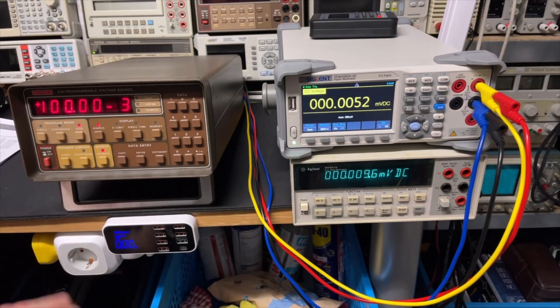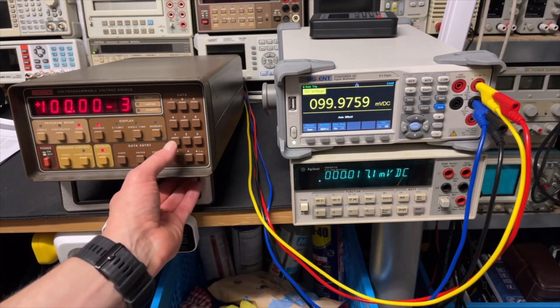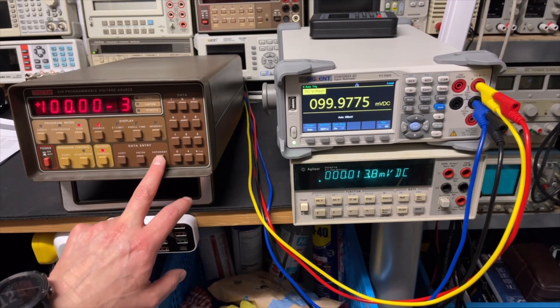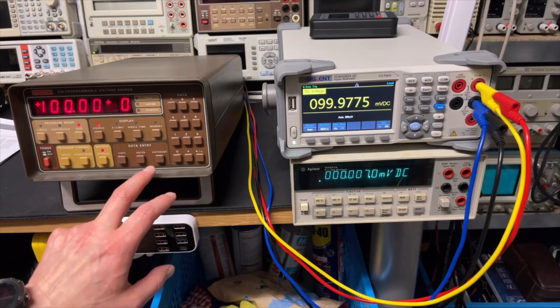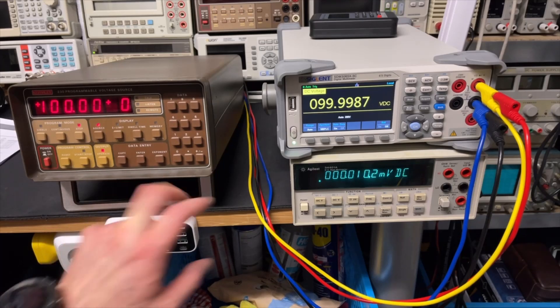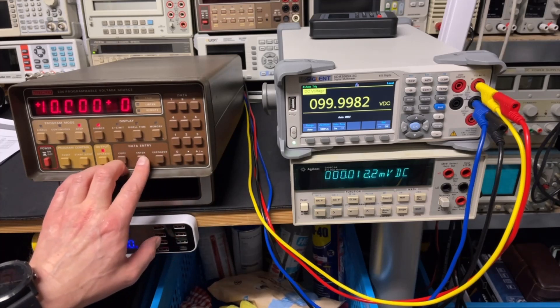Yeah, it takes a while. The sample is a bit slow of the signal. But its value is okay. So if we do now one volt, we go first to exponent zero. Enter. 10. This should be now 100 volts. Yeah. 100 volts. 10 volts.